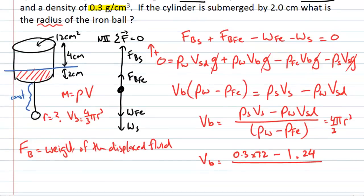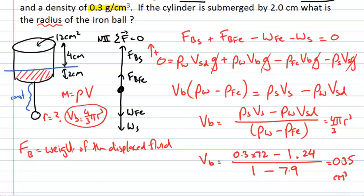Putting these numbers into the calculator gives a volume of 0.35 cm³ — that's the volume of the ball. We haven't found the radius yet, but we use the relation volume = 4/3 π r³. Rearranging to make r the subject: multiply by 3, divide by 4π, then take the cube root. Entering those numbers gives a radius of 0.437 centimetres.